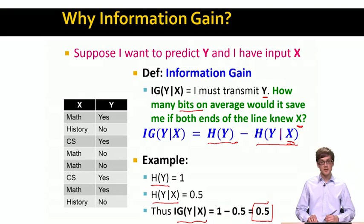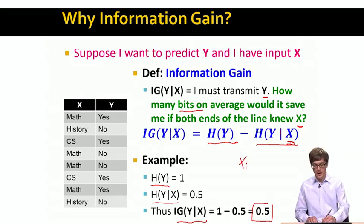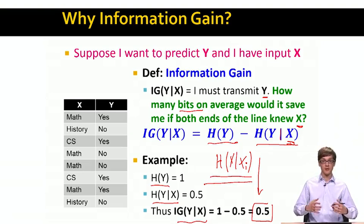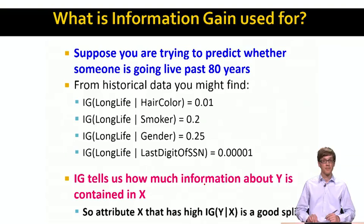The idea is that for every feature x_i, we will compute the information gain of y given x_i. We will then rank our features by decreasing information gain and pick features that have high information gain — those that tell us a lot about the value of y.